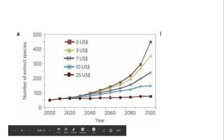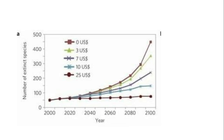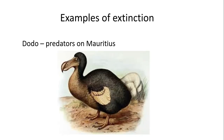Here is a graph showing the current level of extinction and its predicted rise into the future. An example of an animal that has already become extinct is the dodo. This was due to land predators introduced on the island of Mauritius, but it was also hunted by sailors for food. Being a flightless land bird, its ground-level nests were also vulnerable to predators.